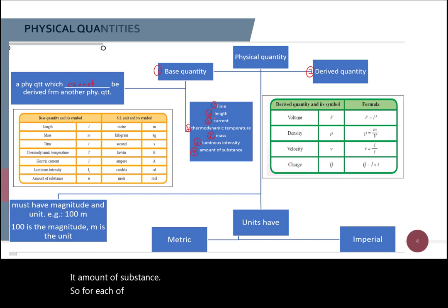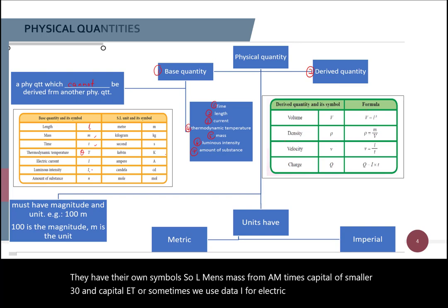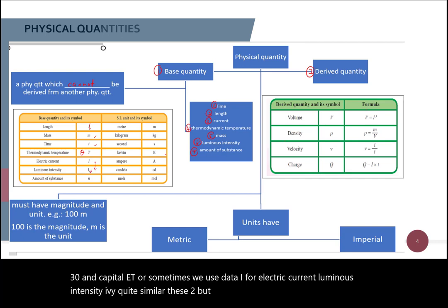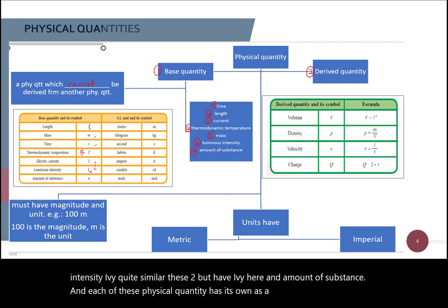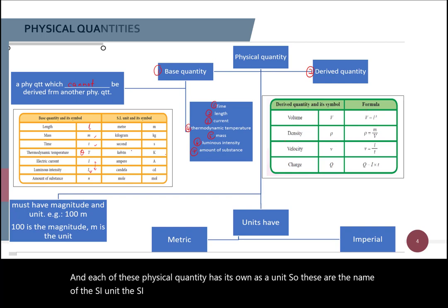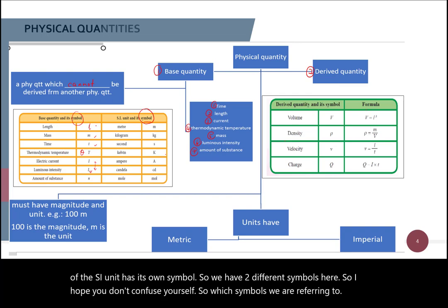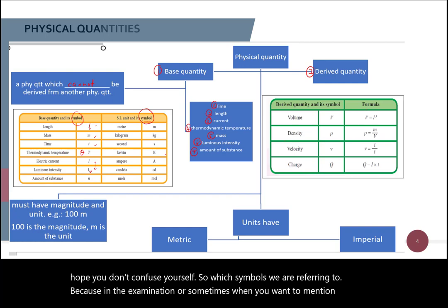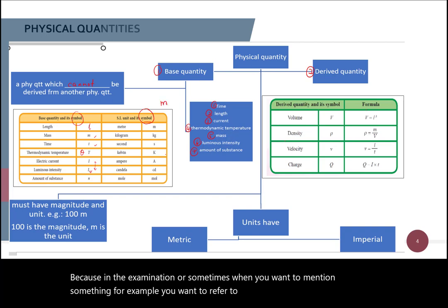So for each of these, they have their own symbols. So L, mass M, time small t and capital T, but sometimes you use theta. I for electric current, luminous intensity IV, and amount of substance. And each of these physical quantity has its own SI unit, so these are the name of the SI unit. And the SI unit has its own symbols. So we have two different symbols here, so I hope you don't confuse yourself. Because in the examination, or sometimes when you want to mention something, for example, you want to refer to length, but you write M. So this M is the symbol for meter, not length, okay? So make sure you know that.